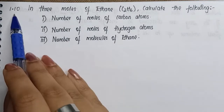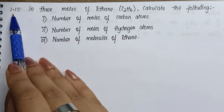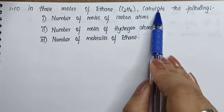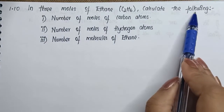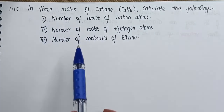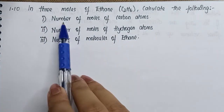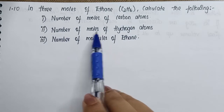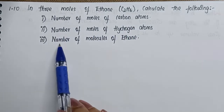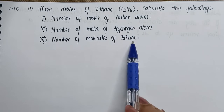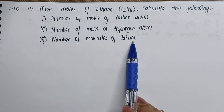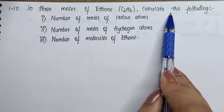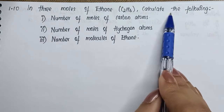Question 1.10: In three moles of ethane, calculate the following. We're given three questions: first, the number of moles of carbon; second, the number of moles of hydrogen atoms; third, the number of molecules of ethane. We will solve them one by one based on the question asked.